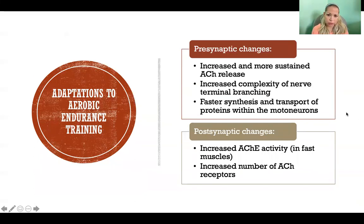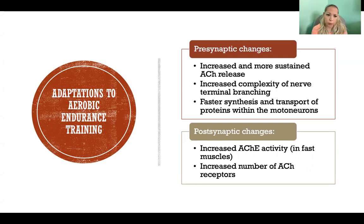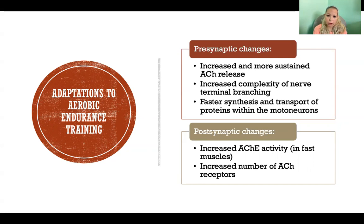So, adaptations to aerobic endurance training. When we look at the neuromuscular junction and talk about presynaptic changes — presynaptic referring to the motor neuron, the side before the synapse; post-synaptic being the muscle fiber, after the synapse — one presynaptic change in response to aerobic endurance training is increased and more sustained acetylcholine release. The motor neuron is able to produce a greater quantity of acetylcholine and secrete it in a more sustained way so that we can sustain contraction longer.